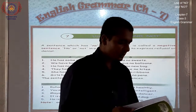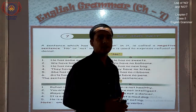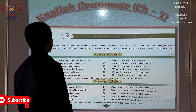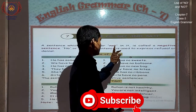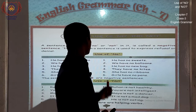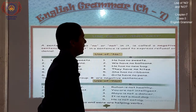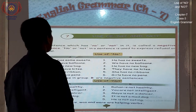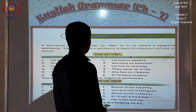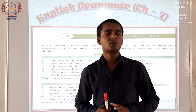Now, in the previous class, I read chapter number 6. This chapter is the 7th. A sentence which has 'no' or 'not' in it is called a negative sentence. वैसा sentence जिस में no या not लगा हो, उसको negative sentence बोलते हैं।